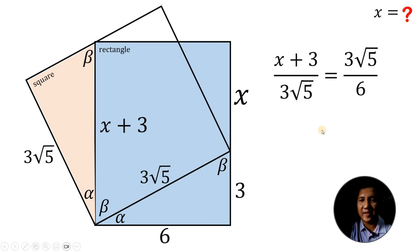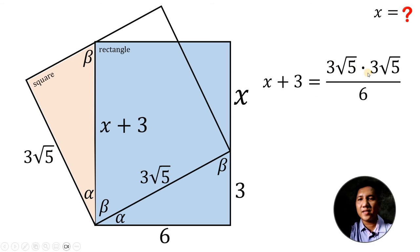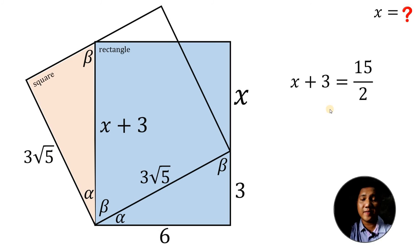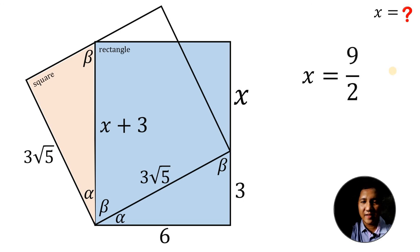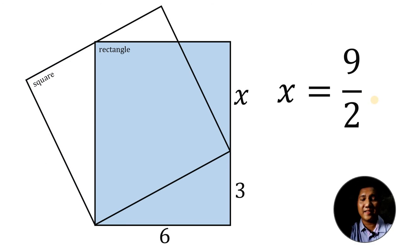Now let's solve for x. Multiplying both sides by 3√5: x + 3 = (3√5 × 3√5) / 6 = (9 × 5) / 6 = 45/6. Since 9 and 6 share a common factor of 3, this simplifies to 15/2. Subtracting 3 from both sides: x = 15/2 − 3 = 15/2 − 6/2 = 9/2. Therefore, the value of x is 9/2.